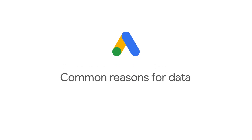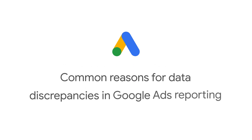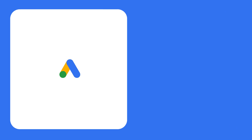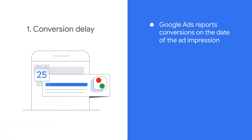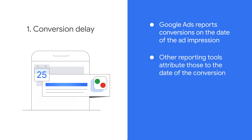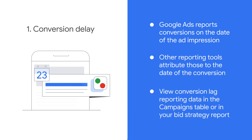Here are some common reasons for data discrepancies in Google Ads reporting. You might notice that Google Ads reports conversions on the date of the ad impression, while some other reporting tools attribute those to the date of the conversion. This is called a conversion delay. You can view conversion lag reporting data in the campaigns table or in your bid strategy report.